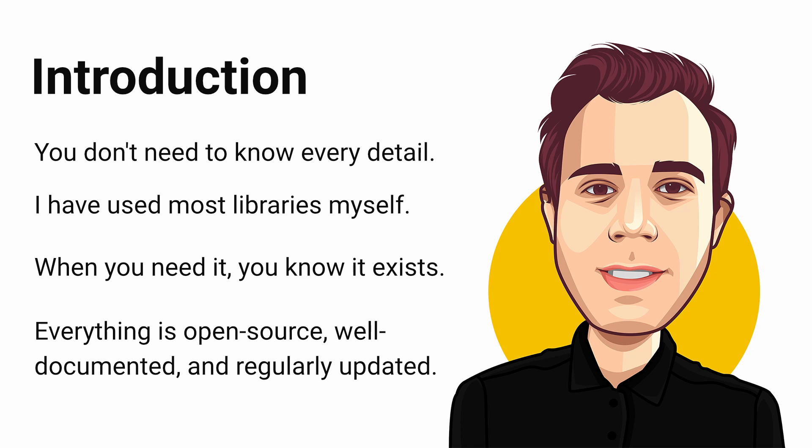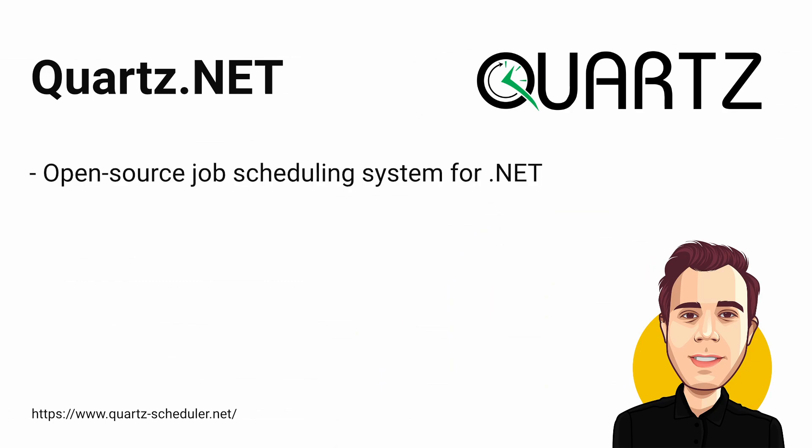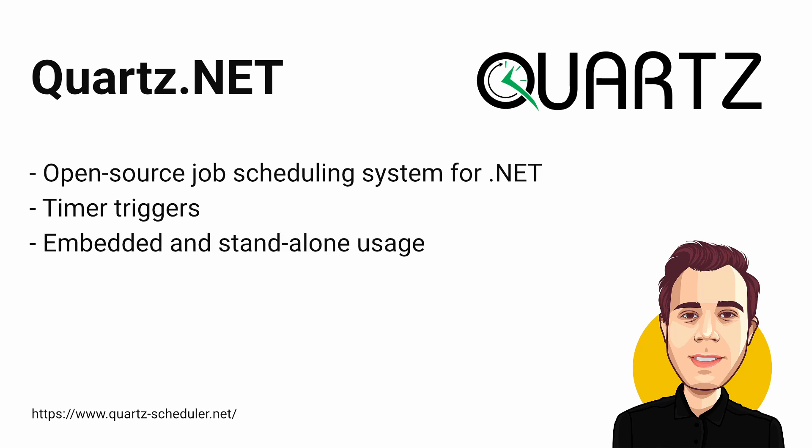Most of the packages are part of the .NET Foundation. With that out of the way, let's jump into the first package. Quartz.NET is an open source job scheduling system for .NET. You can implement jobs and schedule them using timer triggers, or define how many times a job should be executed. You can embed Quartz.NET in any .NET application, run it as a standalone process, or run a cluster of standalone programs with load balancing and failover capability. You can use Quartz.NET in simple projects or advanced business scenarios. I used it in two different projects and the customer was happy with the results in both cases.